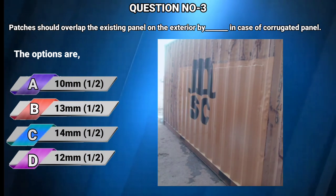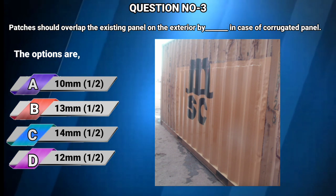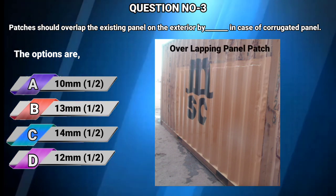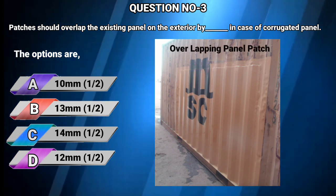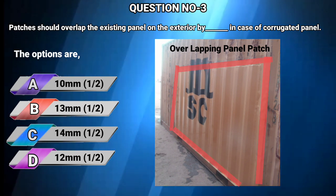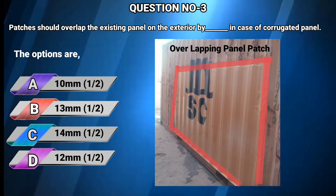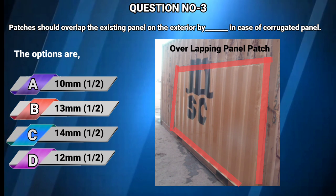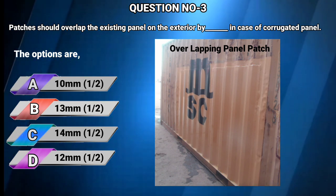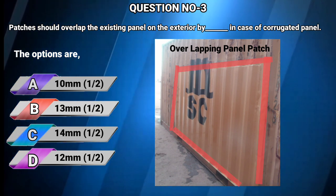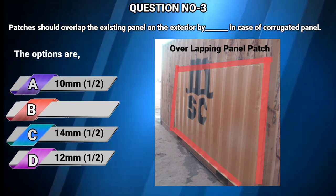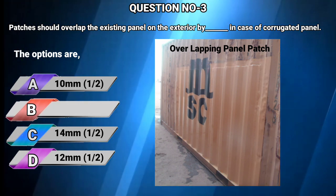Question number 3: Patches should overlap the existing panel on the exterior by — in case of a corrugated panel. Options: A) 10 mm, B) 13 mm, C) 14 mm, D) 12 mm. The answer is B: 13 mm.